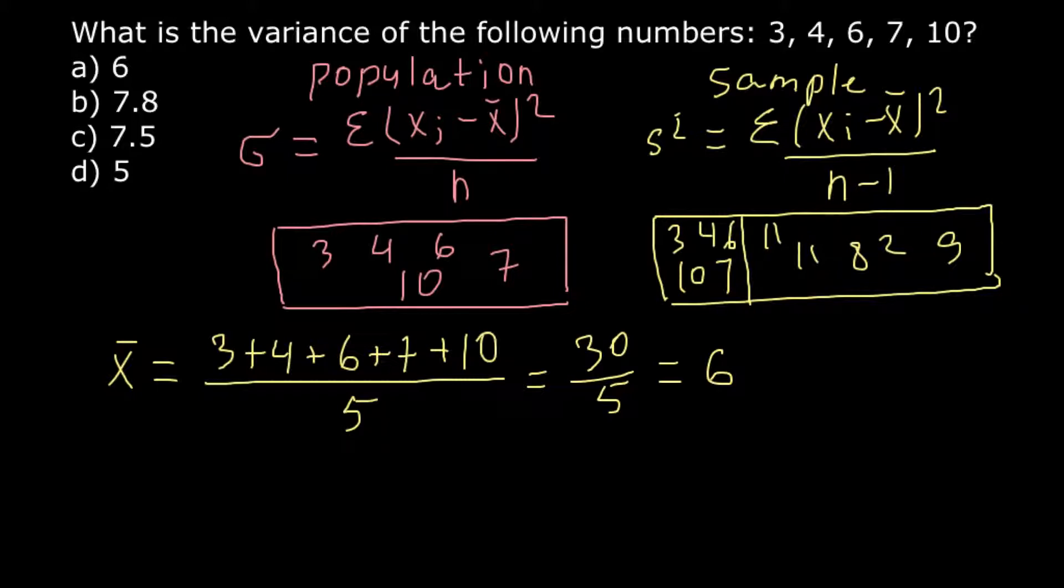Now, with the second step, we have to find the difference, the square difference of this mean and these numbers. So xi stands for the set of numbers. For example, this can be x1, x2, x3, x4, and x5. And just for short abbreviation, we just use xi here in the formula. That stands for the set of numbers.